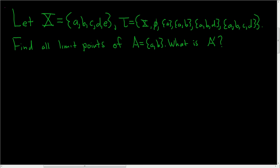We have a set X and a topology tau on X, and we're asked to find all of the limit points of A. We're also asked to find the derived set, which is the set of all limit points of A. Let's go ahead and work it out.